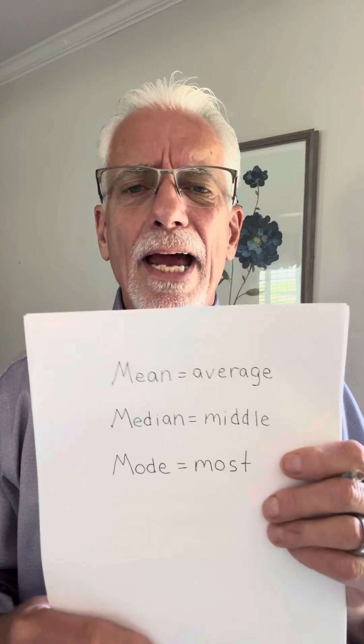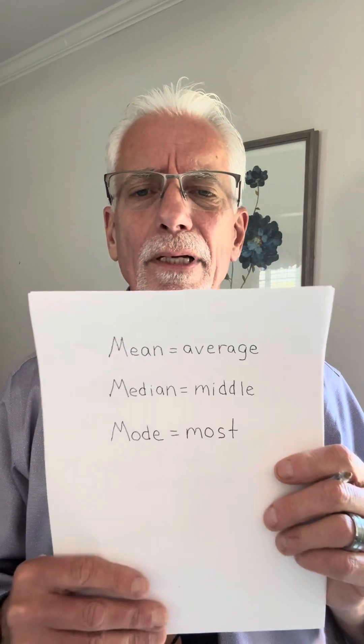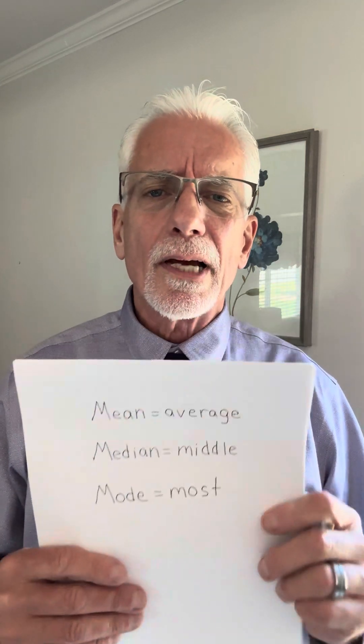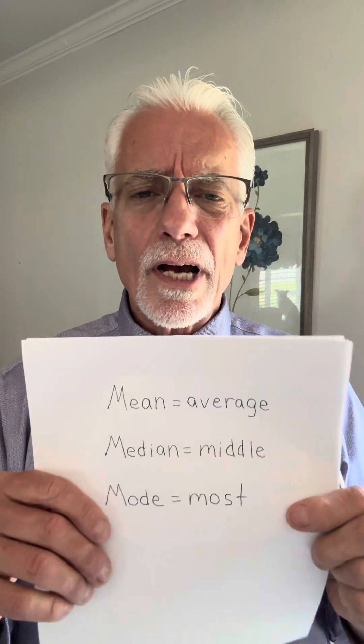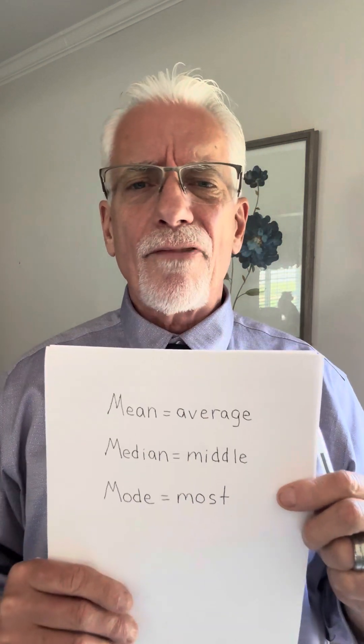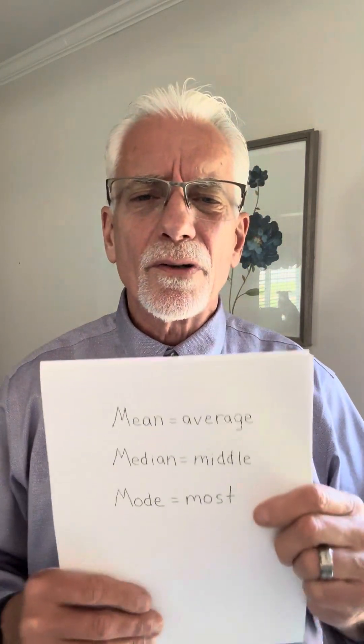The mean is the average, the median is the middle, and the mode is the most. I tell my students that it's mean to say that you're average — mean equals average. The median is like the median strip that goes down the middle of the highway, so median means middle. And mode sounds like most — think of fashion modes, like who's wearing the number seven the most. That's fashion mode, so mode sounds like most.